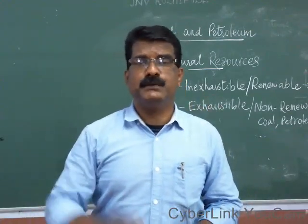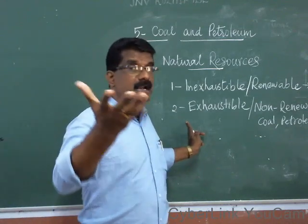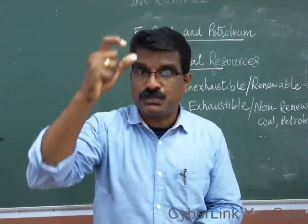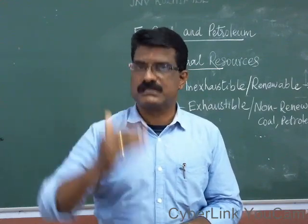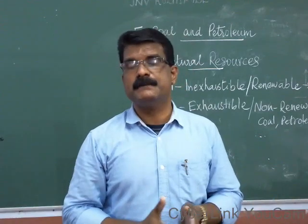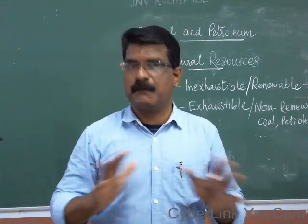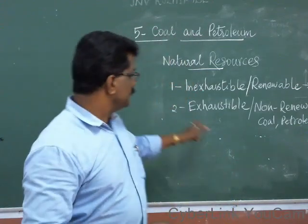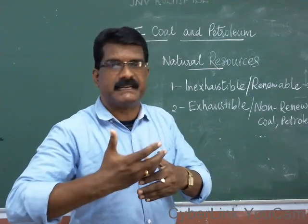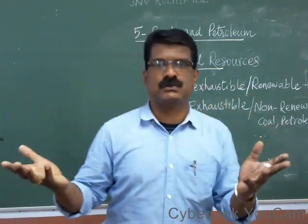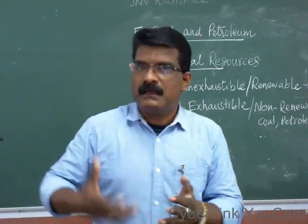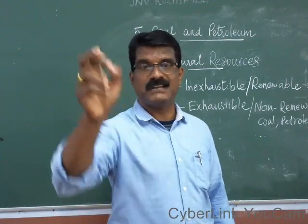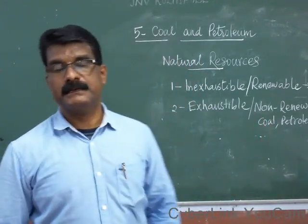Therefore, we must be very careful in using exhaustible natural resources because they are available only in limited amount. To recap: natural resources are of two types — inexhaustible and exhaustible. Inexhaustible resources are available in large quantity, can be recycled and renewed, and will not be completed. Examples: air, forest, water. Exhaustible resources are available only in limited amount, will be completed fast, and cannot be recycled. Examples: coal, petroleum, and natural gas.